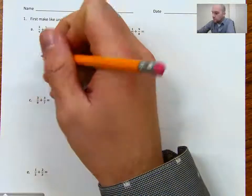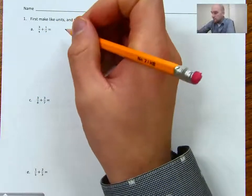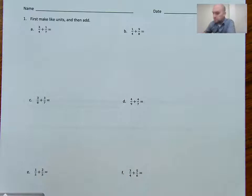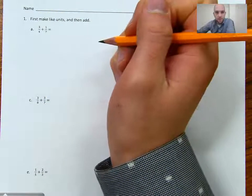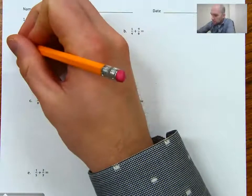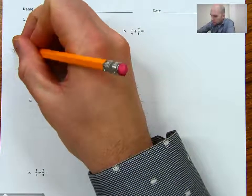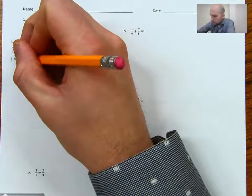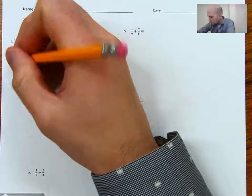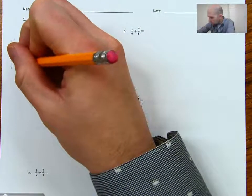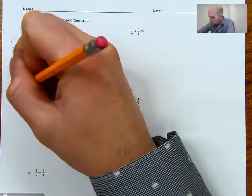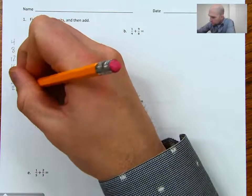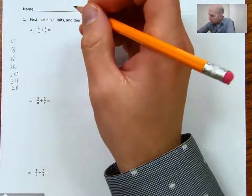So we have 3/4 plus 1/7, and so we need to find like denominators. The way that I'm going to do that is I'm going to kind of make a number tree of both counting. I'm going to count by 4s and I'm going to count by 7s. So I'm going to start by going 4, 8, 12, 16, 20, 24, 28. I'll stop there for now.